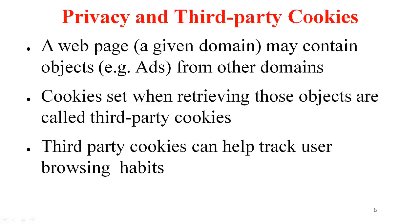You probably don't mind first-party tracking — if you are visiting the Amazon website and it tracks what web pages within Amazon you visited, that is probably fine. But you do mind others getting to know your entire web browsing history: that you visited Amazon, then Yahoo, then Flipkart, and so on. This can potentially be achieved through what are called third-party cookies. A given web page for a given domain may contain objects from other domains — for example, advertisements. When you display this web page you also contact those other domains to retrieve the ads, and as part of that, cookies related to those other domains can be set. Those are called third-party cookies.